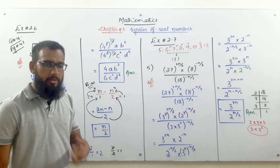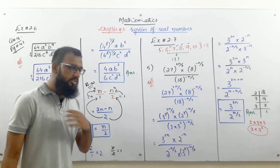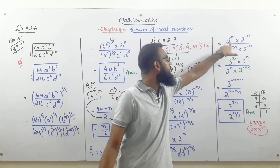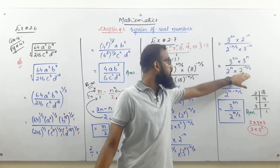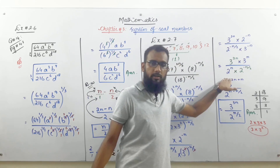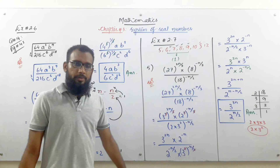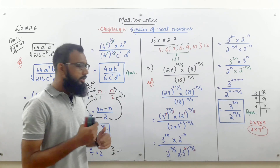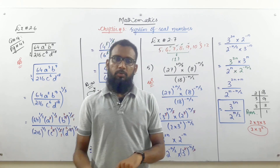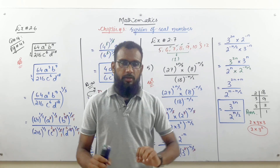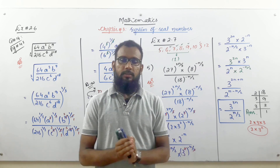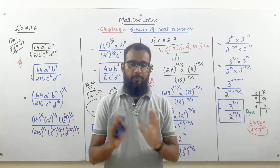So this is 3 to the power 2n and 2 to the power minus n/2. After solving the LCM for the exponent n minus n/2, the answer comes out to n/2. So the final answer is 3^(2n) multiplied by 2^(n/2). I hope there is no confusion. If you have any query, come to the chat box and write — I will resolve it. Take care, Allah Hafiz.